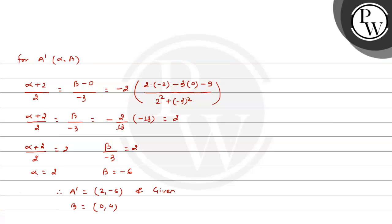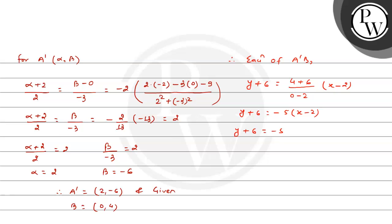Now find the equation of line A'B, connecting A'(2, -6) and B(0, 4). Using two-point form: (y - y₁) = (y₂ - y₁)/(x₂ - x₁) × (x - x₁). This gives y + 6 = (4-(-6))/(0-2) × (x - 2), which simplifies to y + 6 = -5(x - 2), giving y + 6 = -5x + 10. Therefore the equation is 5x + y = 4.